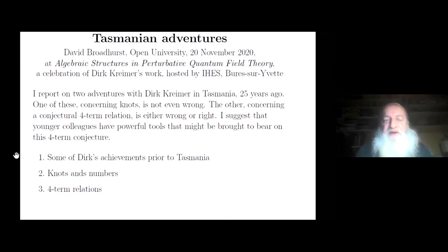And I've chosen two topics, knots and numbers and four-term relations, that you can find in his book, the only book that Dirk has published. It's called Knots and Feynman Diagrams. You saw a picture of the cover in Mark's talk.